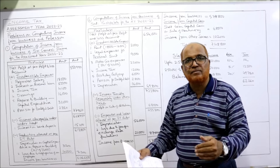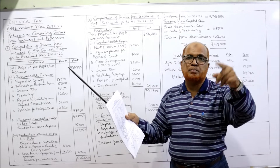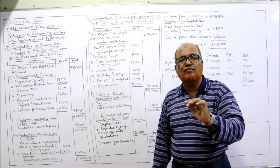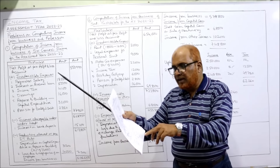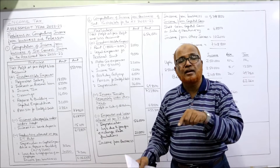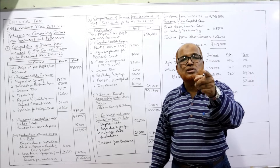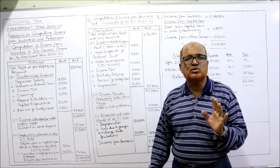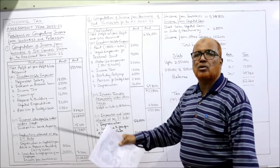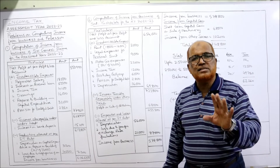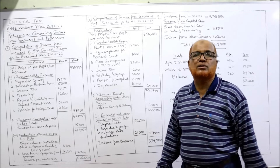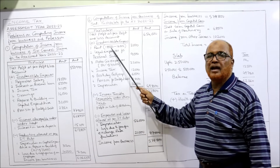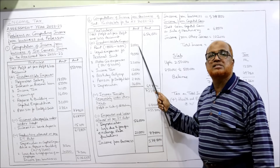Rent paid is 18,000. On the credit side, rent from subletting is 2,000 — the assessee is subletting part of the property. The Income Tax Act says subletting rent will be deducted from rent paid. Rent paid 18,000 minus subletting rent 2,000 = only 16,000 is allowed as deduction. But the amount debited to P&L is 18,000, so 2,000 is disallowed. Rent disallowed — 2,000.